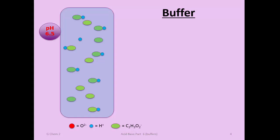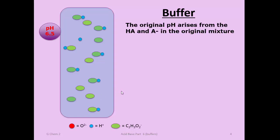Let's look at how a buffer works using an acetic acid buffer to which acetate has been added. Whether you use sodium acetate, potassium acetate, or lithium acetate really doesn't matter—choose a cation from group 1 so it's a neutral salt. You add not just the weak acid but also the conjugate base, such as acetate in the form of sodium or potassium acetate. The original pH of this mixture of sodium acetate and acetic acid is really determined by the weak acid, which is the stronger equilibrium. Because it is a weak acid, there is very little dissociation, so you'd have a fairly high pH—6.5 in this case.